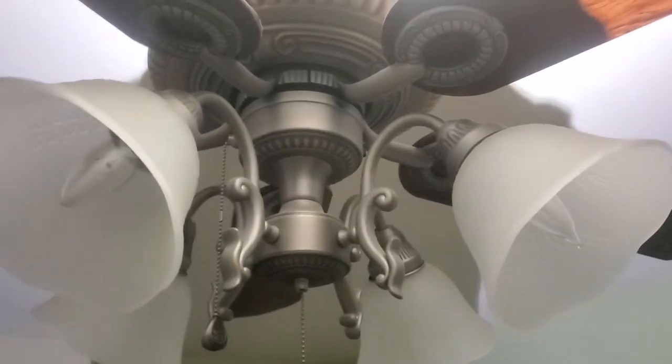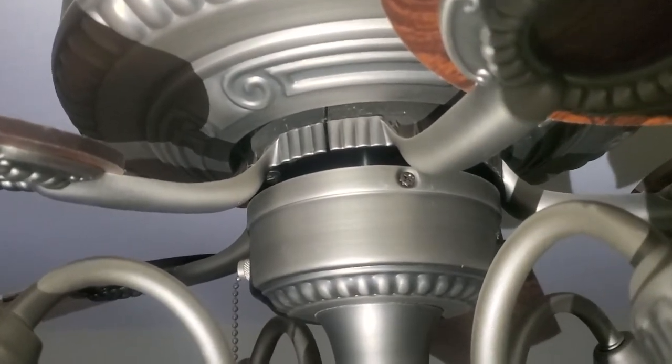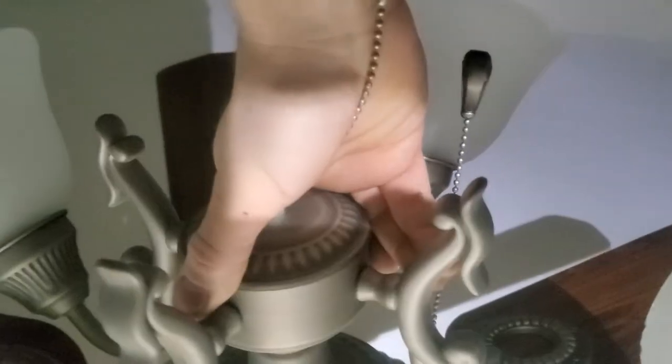First off, I'm going to remove the screws. There's usually three screws—three or four—there's one over here, and then one over on that side. So there's three screws to remove, and it should drop right down.